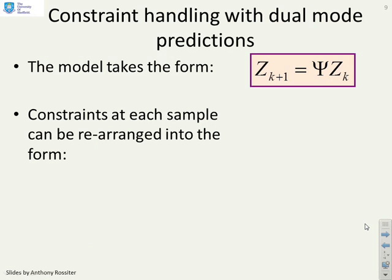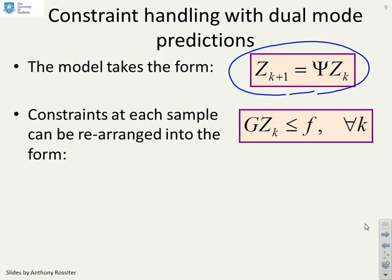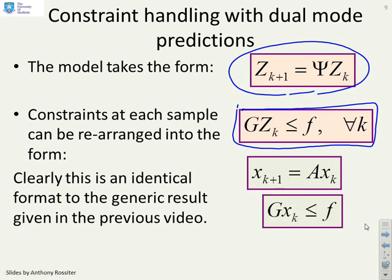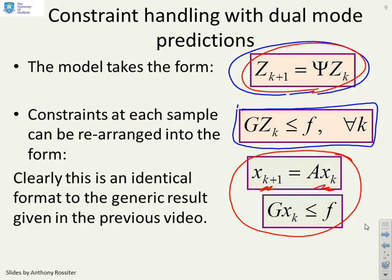We can express the predictions using a model like zk+1 = Ψzk. We've said we can explain the constraints at each sample in this form: Gzk ≤ f. If you look at those two expressions, they have exactly the same structure as the expressions we used to form our admissible set. xk+1 = Axk looks just like this one, except we've got a different state. Gxk ≤ f looks just like this one here. So we've got exactly the same structure and therefore we can plug these directly into our MAS algorithm to test constraints for our OMPC predictions.